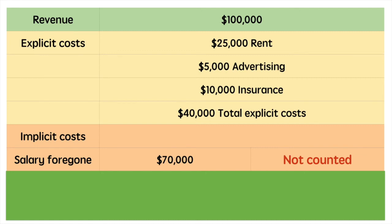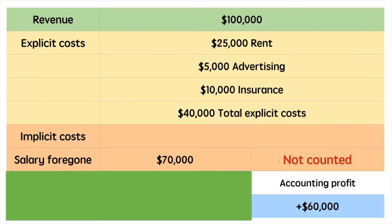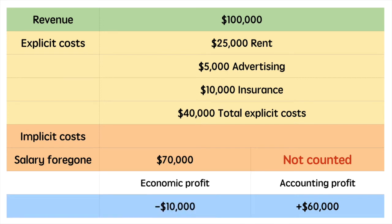From the accountant's perspective, Sam's firm is making a profit of positive $60,000. That's simply subtracting the explicit costs from the revenue earned. Now from the economist's perspective, since Sam's time could have been used to earn $70,000 in a salaried position, the economist would say running this business is actually resulting in a loss of $10,000. In purely financial terms, Sam would be better off returning to her salaried position as opposed to running this business.